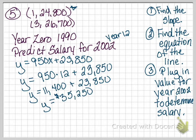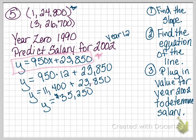On the test, I'm looking for two things: the model equation — 950x plus $23,850 — and the predicted salary value when you plug in the year.